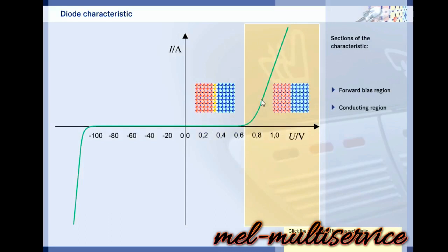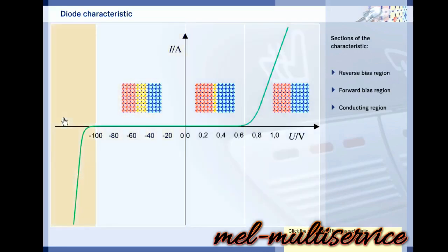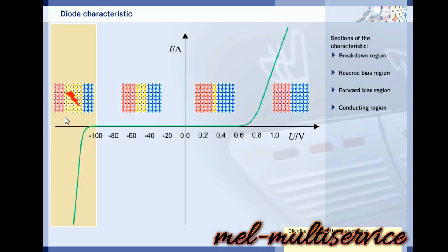At higher forward bias voltages, current can flow through the diode. Under reverse bias, the current flow through the diode is practically zero. At very high reverse bias voltages, breakdown through the depletion region occurs. This can irreversibly damage the diode.